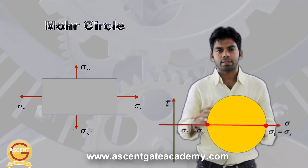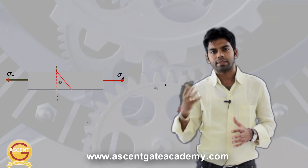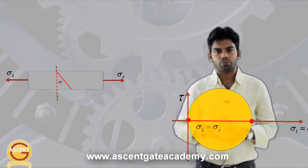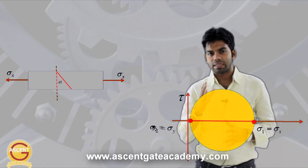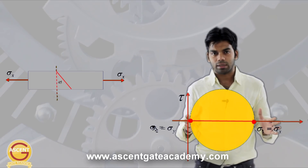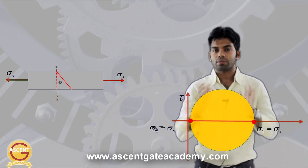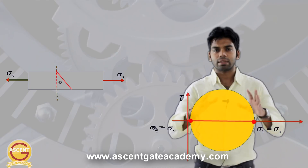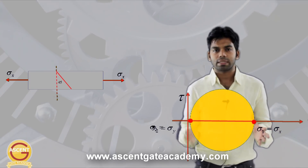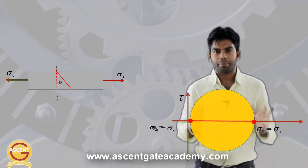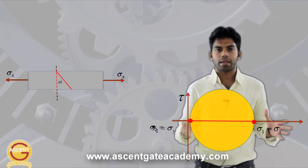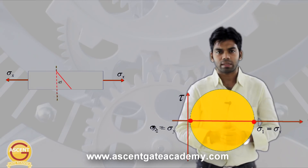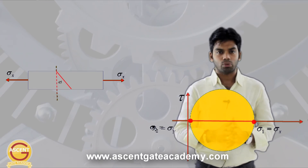In our case, sigma_y is zero because we have a bar subjected to an axial load — stress acts only in the x direction. So this circle shifts such that it is tangent to the y-axis, and the diameter of the circle equals sigma_x. This is a very important point: whenever you see a bar subjected to an axial load, immediately visualize a Mohr circle tangent to the y-axis whose diameter equals sigma_x. When diameter equals sigma_x, the radius equals sigma_x/2, which is also the maximum shear stress.